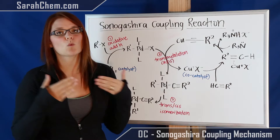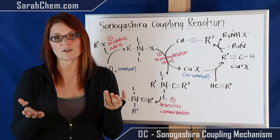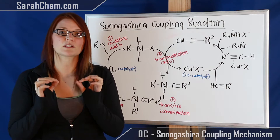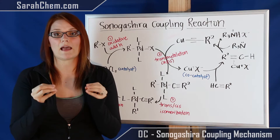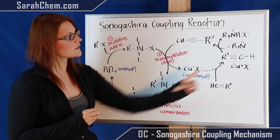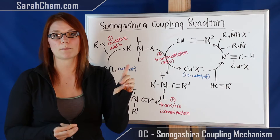First I want to start with the copper cycle. One thing to point out is that the copper cycle is not very well understood. They don't know exactly what intermediates form and they're not exactly sure how things are happening, but we do have some really good ideas or hypotheses based on what we've seen in the lab. The copper cycle is going to help facilitate the terminal alkyne's preparation for the final product formation.